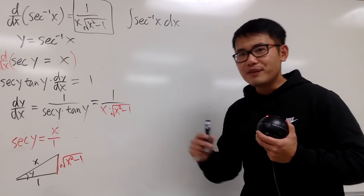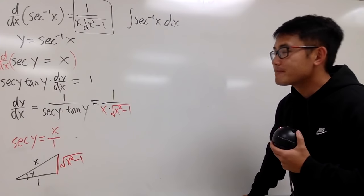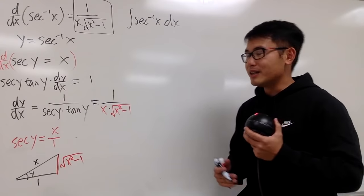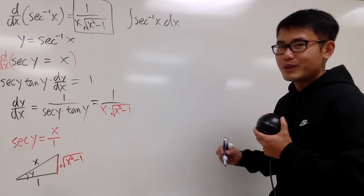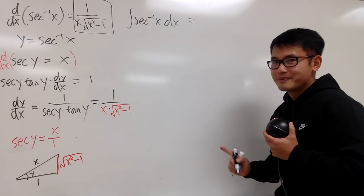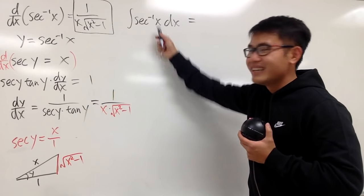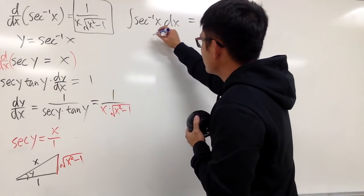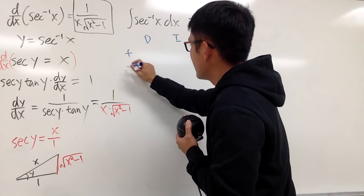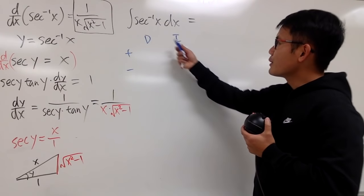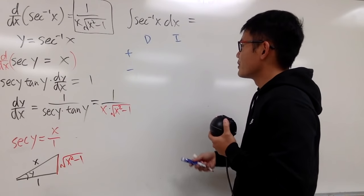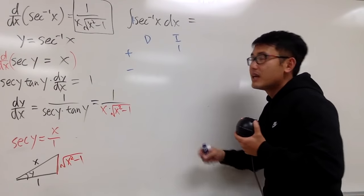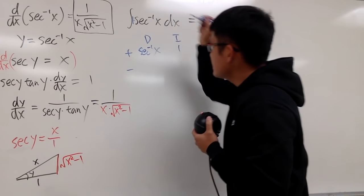Now let's see how we can integrate inverse secant x. We actually have to use integration by parts. By now, hopefully you've done a lot of integrations with inverse functions — this is usually done with integration by parts, because we can differentiate inverse secant much better than integrating it. I'll use the DI setup. I'm not going to put inverse secant in the integrate column; I will integrate 1, since this is like 1 times the inverse secant, and I will differentiate inverse secant x.